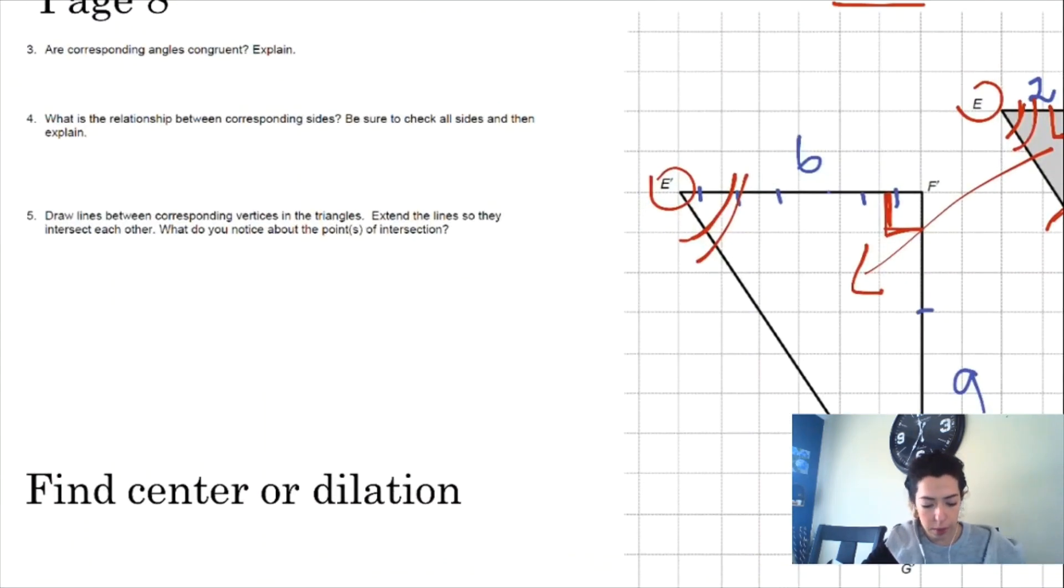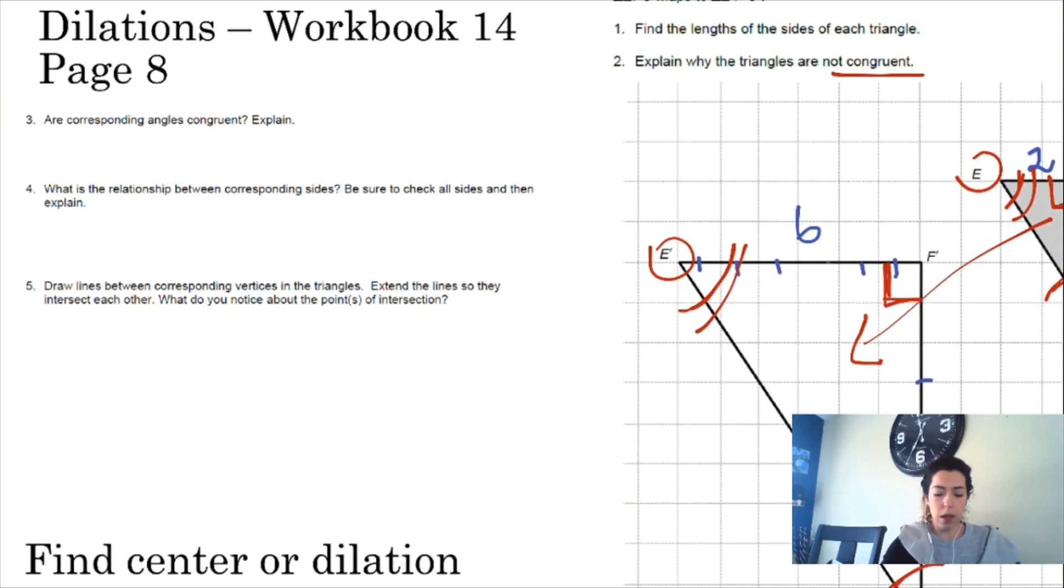It says, are corresponding angles congruent? Yes, they are. As a matter of fact, when you have a dilation, angles are preserved, which means they stay the same. Even though the size is changed, the angles stay the same. We can see that pretty easily when we have a square. If you have a square and you make the square bigger, we still have 90 degrees in each one of those vertices.